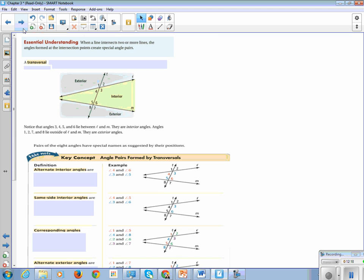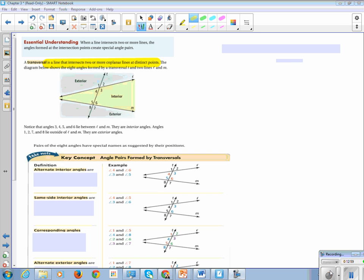Next page. When a line intersects two or more lines, the angles formed at the intersection create special angle pairs. So, we are going to talk about a transversal. A transversal is a line that intersects two or more coplanar lines at distinct points. You guys don't have to write the diagram below.